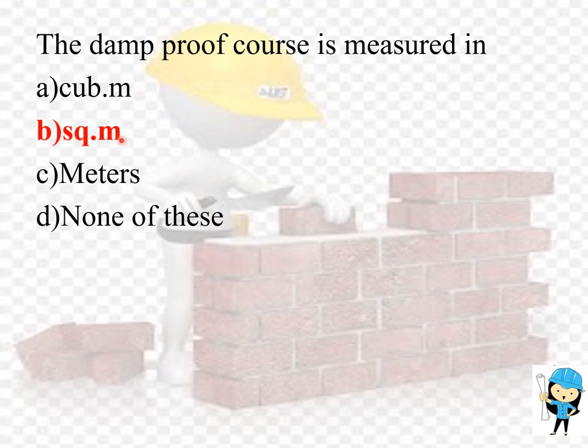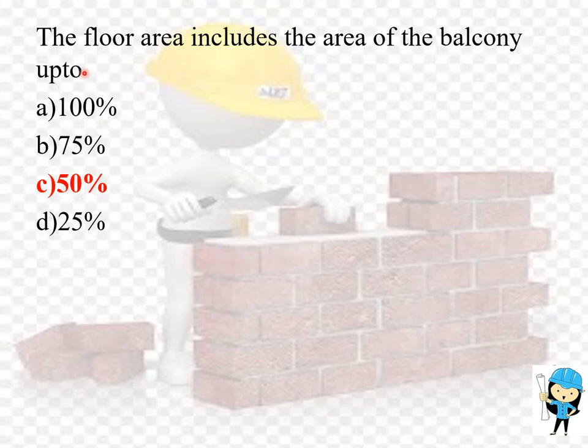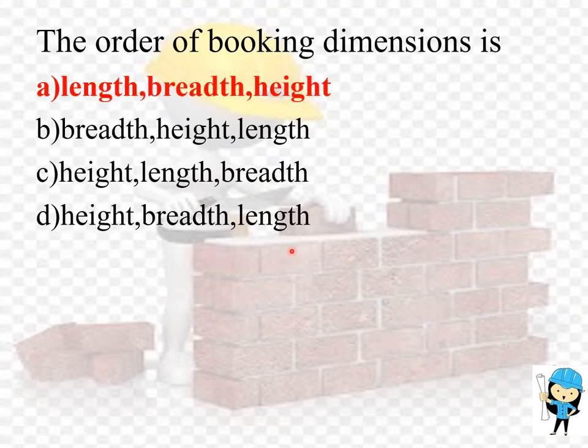The damp proof course is measured in meter squared. The volume is measured correct to the nearest 0.01 cubic meter. The area is measured as 0.01 meter squared. The length is measured to 0.01 meter. The floor area includes the area of the balcony up to 50 percentage. The order of booking dimensions is length, breadth and height. This order is followed during booking.